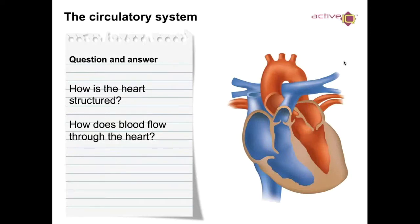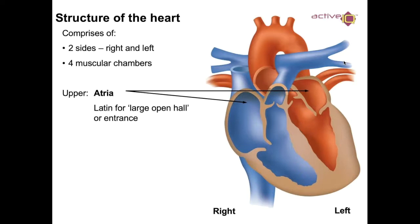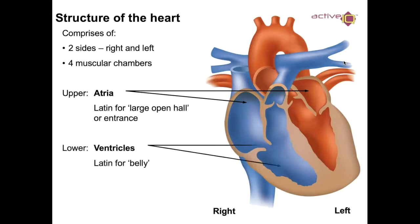How does blood flow through the heart? The structure of the heart comprises two sides — the right side and the left side — with four muscular chambers. The upper two chambers are the atria, which is Latin for 'large open hall or entrance.' The lower chambers are the ventricles. Understanding these Latin words will really help you remember the structure of the heart.